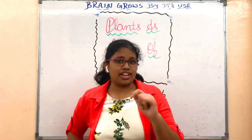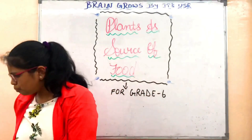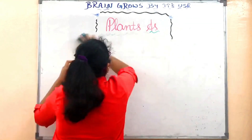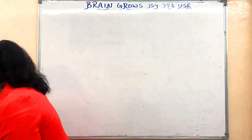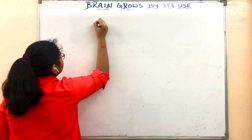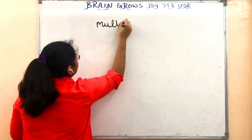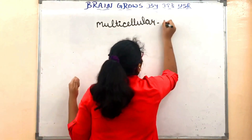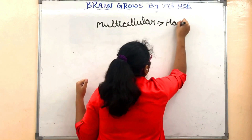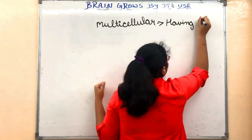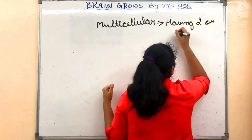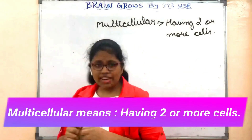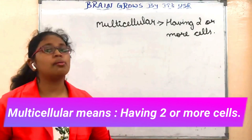Plants are mainly multicellular organisms. What do we mean by multicellular? Multicellular means having two or more cells. The organisms having two or more cells are referred to as multicellular organisms.